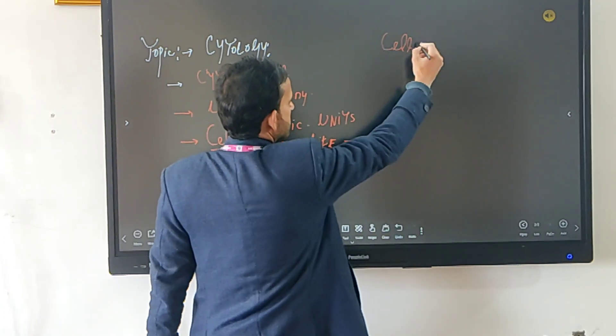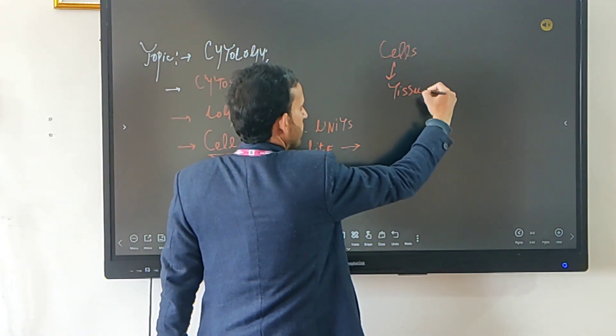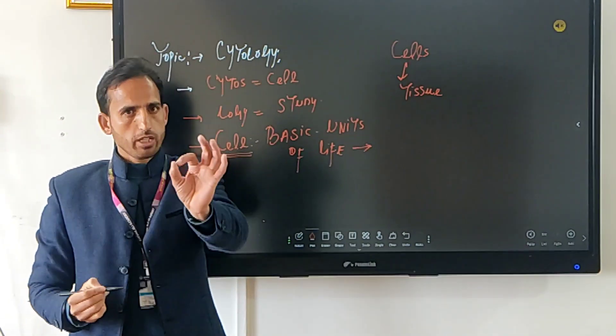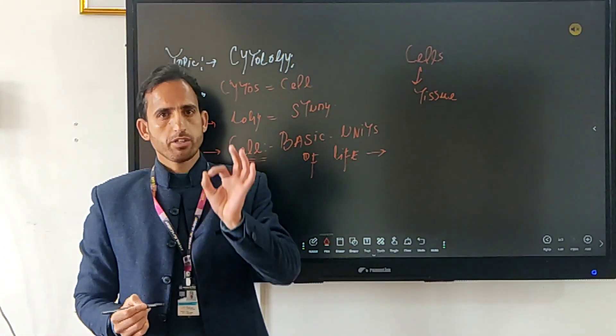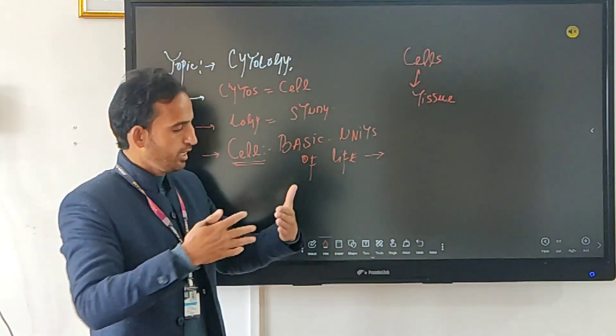And that structure is simply called tissue. In our body, there are four types of tissues. We have the epithelial tissue, the muscular tissue, the nervous tissue, and then we have the connective tissue.